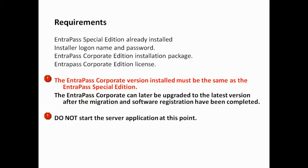One important note: the Entrapass Corporate must be the same version as the Special Edition. For example, if you have Special Edition version 5.0.0, the Corporate you buy will come at the latest version, like version 7. You will not be able to install version 7 directly. You need to download version 5 of Corporate, install that version 5 on the same computer, complete the migration process, and then you can upgrade to version 7 for free afterward.